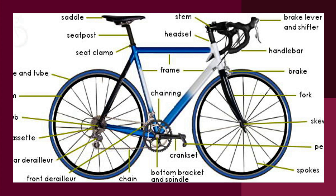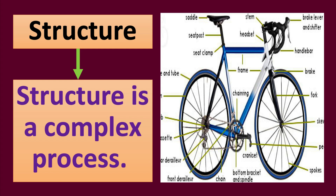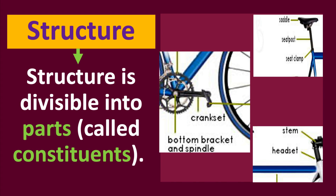A complex thing like a bicycle is not just a collection of randomly assembled bits and pieces. A bicycle consists not just of its components, but more importantly the structure that results from fixing them together in a particular way. If you gather all the components — metal tubes, hubs, spokes, chain, cable — and don't fix them properly, you cannot make a bicycle. A structure is all about the arrangement and relations between parts. It is divisible into constituents, each with a specifiable function, and results from fixing parts together in a particular way.